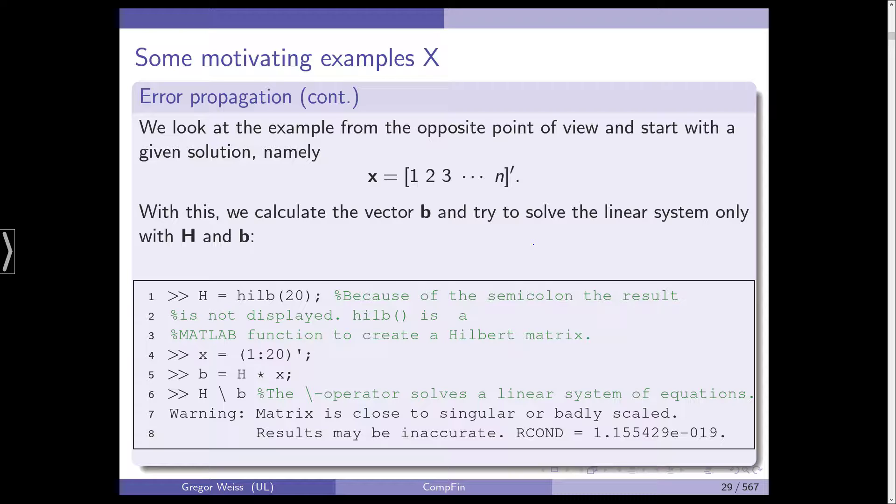Now, if we know the coefficient matrix is the Hilbert matrix, and we already have our solution, then, of course, we can calculate the vector b. So, that's what we do, h is initialized as a 20-dimensional Hilbert matrix, x is our solution vector, and then the vector b is just h times x, and there, between lines 5 and 6, we do make a cut.